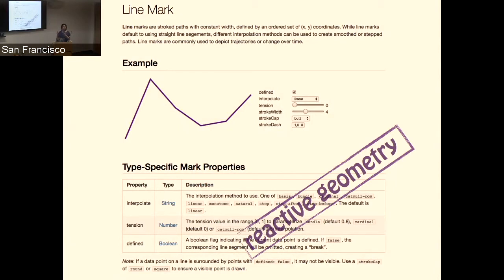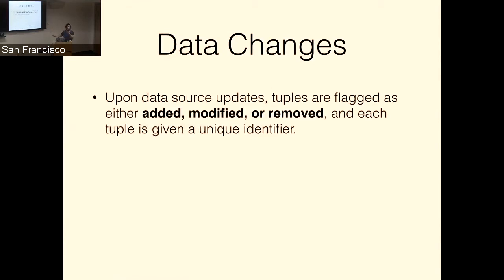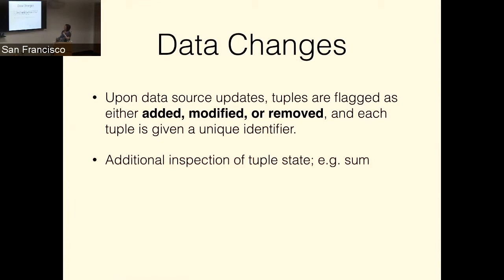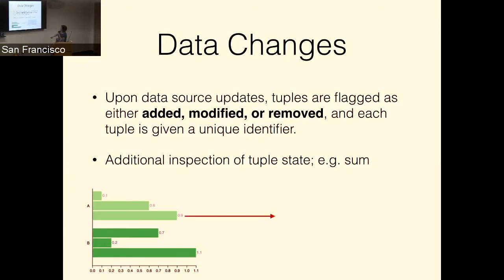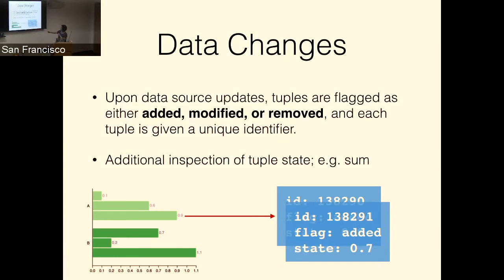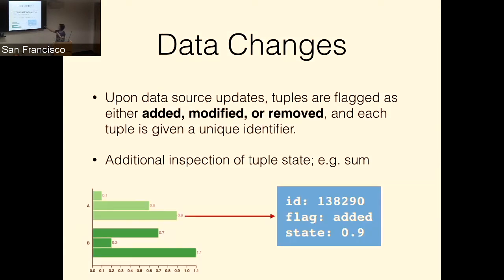If I have a sum of something, I don't need to recalculate from scratch — if you tell me you removed five, I can just subtract five from my sum. Data points have an ID, a flag (added, modified, or removed), and a state corresponding to their current value. With a bunch of changes, we have a 'change set' — a set of changes consisting of new tuples observed, new signal values from interactions, or intermediary updates not directly triggered by interaction. Raw data and interaction events are all streaming inputs in a uniform fashion, making component integration much easier.